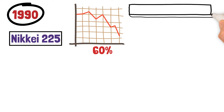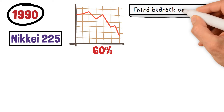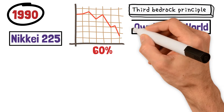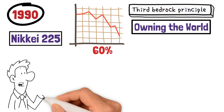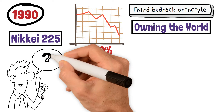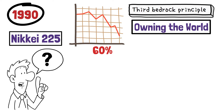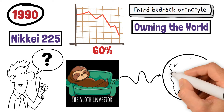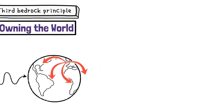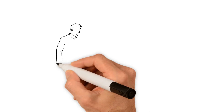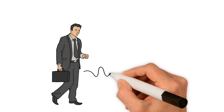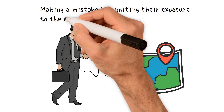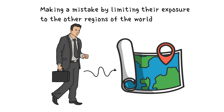Let's take a moment now to reflect on the third bedrock principle of the Sloth Investor: it is owning the world. Quite simply, it's because the Sloth Investor recognizes that quality companies exist in every corner of the globe. An investor that over-invests in one specific geographic region is making a mistake by limiting their exposure to the other regions of the world.